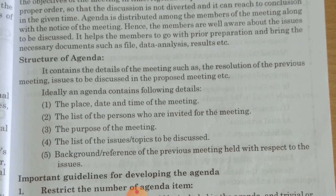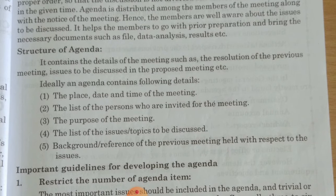The agenda contains the details of the meeting such as: 1. Place, date and time of the meeting. 2. The list of persons who are invited for the meeting. 3. The resolution of the previous meeting to be discussed in the proposed meeting. 4. The list of issues and topics to be discussed.